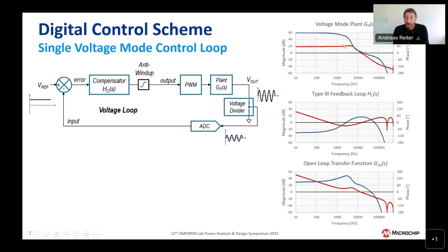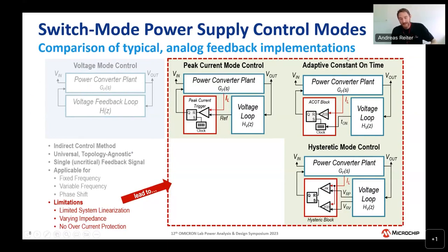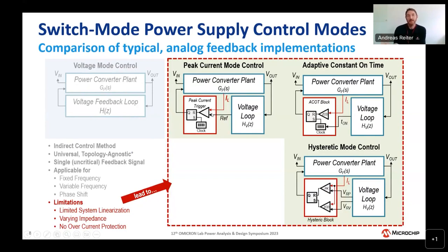Because we can't do much about that resonant point, we always have to work around it, which has system limitations that drive us toward other control options. These are current-based control methods implemented by modified switch nodes, solving these problems by allowing the switch node to respond to triggers directly from the inductor current to take direct control.